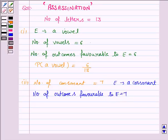Therefore, the probability of choosing a consonant is equal to 7 by 13. That is the number of outcomes favorable to E upon the total number of outcomes.